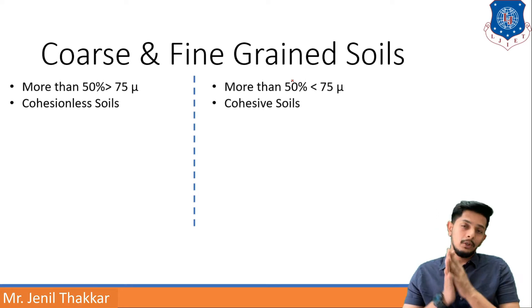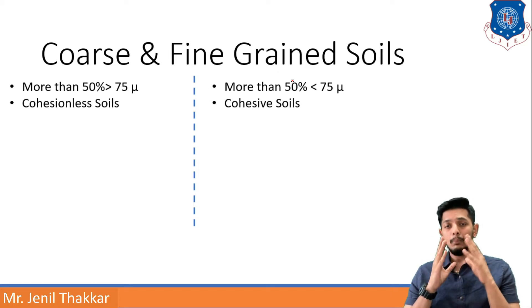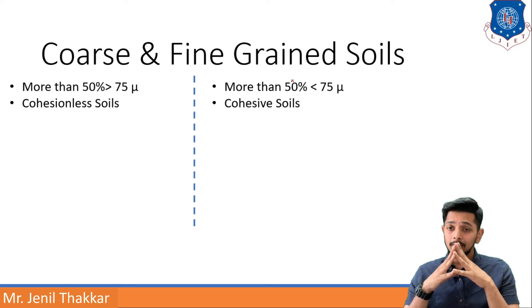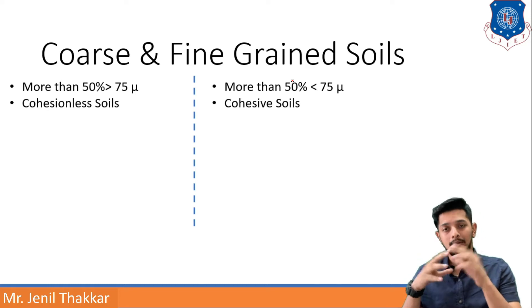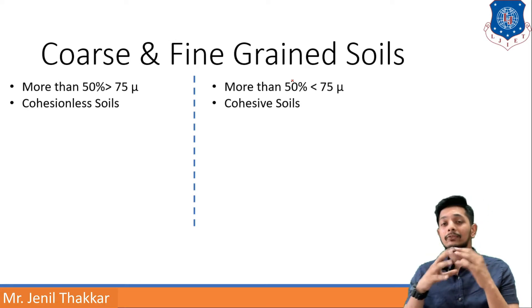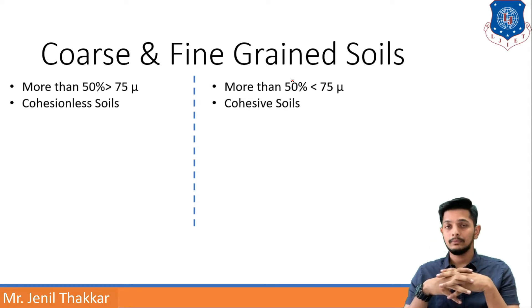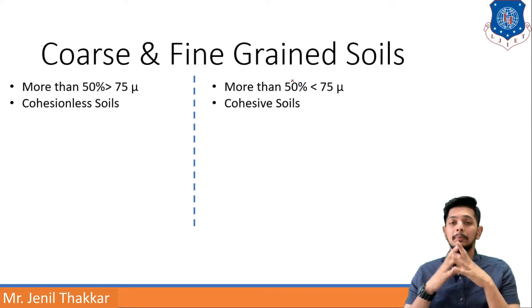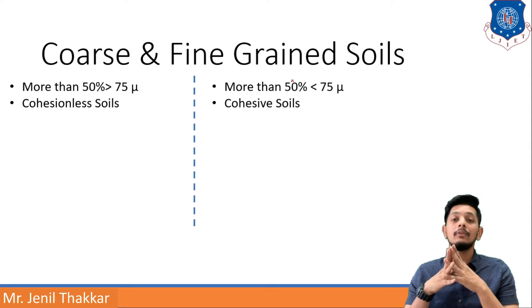If 50 percent or more than 50 percent of soil is having diameter more than 75 micron, then the soil will be coarse grained soil. The grains are coarse because more than 50 percent of grains are having size greater than 75 micron. Same way, if more than 50 percent of the particles are less than 75 micron in size, then it is a fine grained soil.